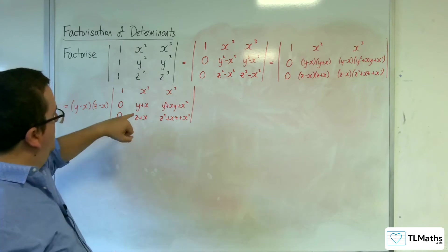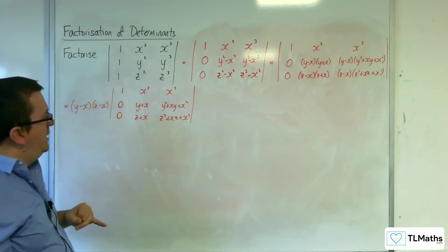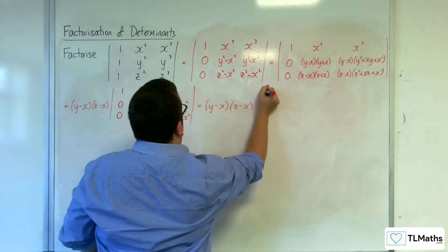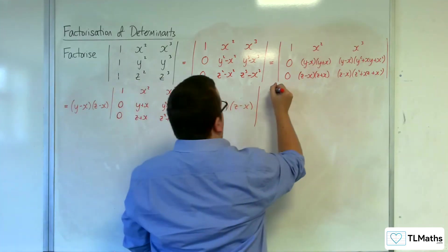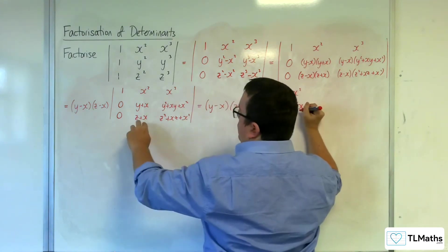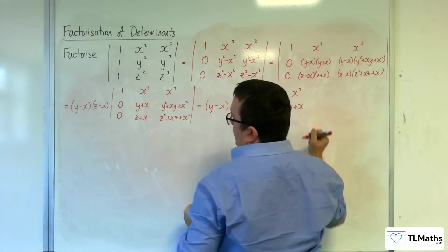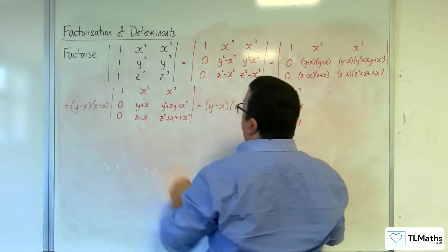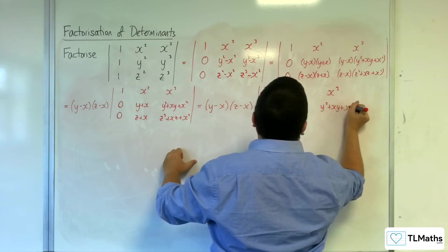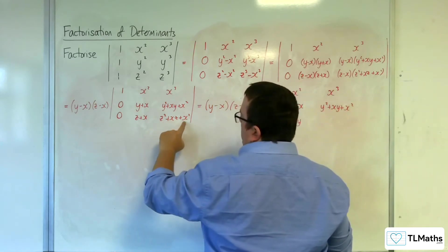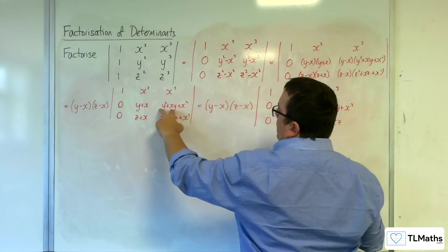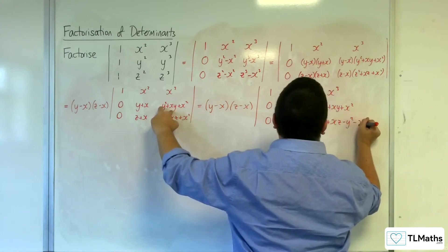If I do row 3 minus row 2, I get: 1, 0, 0 still; then x², (y + x); then (z + x) − (y + x) = (z − y); then x³ and (y² + xy + x²); then (z² + xz + x²) − (y² + xy + x²) = z² + xz − y² − xy.